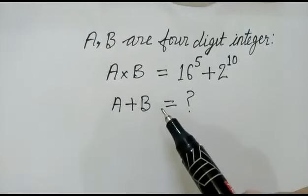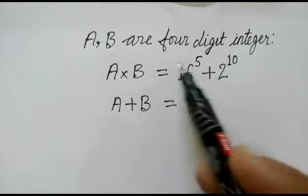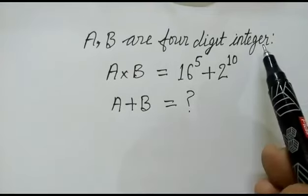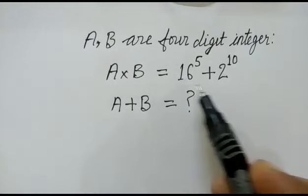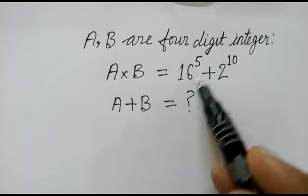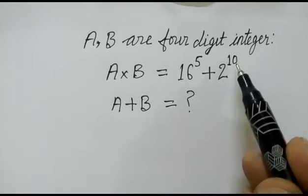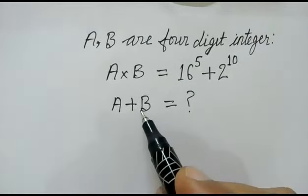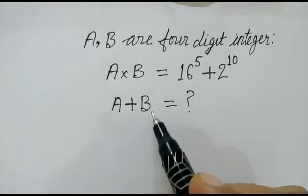Hi friends, today we have a nice problem. A and B are 4-digit integers. A into B is equal to 16 to the power 5 plus 2 to the power 10. We have to find out value of A plus B.